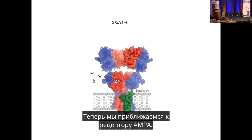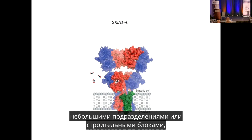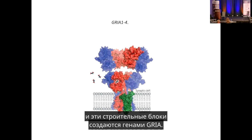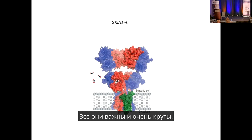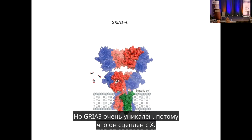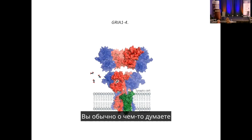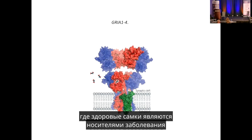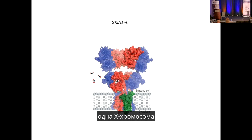The AMPA receptor is composed of subunits encoded by four GRIA genes: GRIA1, GRIA2, GRIA3, and GRIA4. GRIA3 is unique because it is X-linked. In classic X-linked disorders, healthy females are carriers and pass the disease to affected males, who have only one X chromosome. But the picture for GRIA3 is more complex.